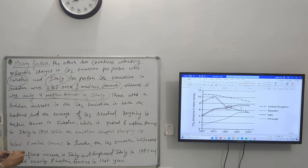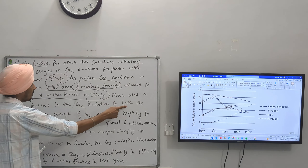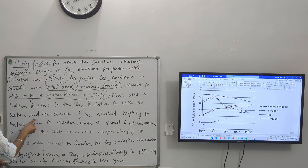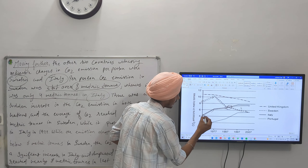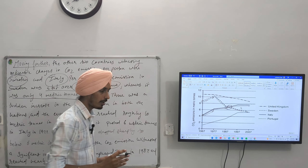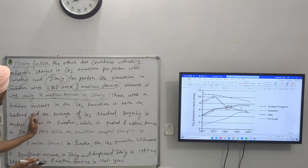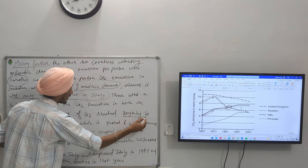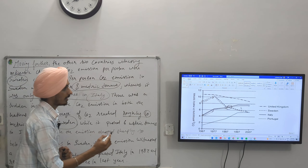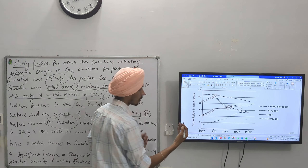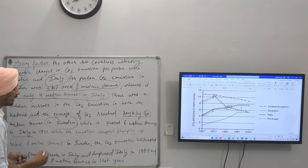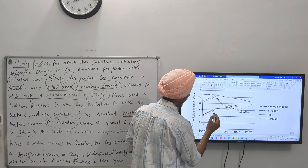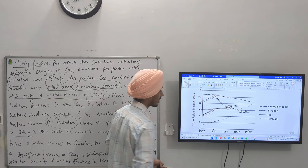There was a sudden increase in the CO2 emission in both nations and the average CO2 reached roughly 10 metric tons in Sweden, while it passed 6 metric tons in Italy in 1977. Here the first two years are complete.